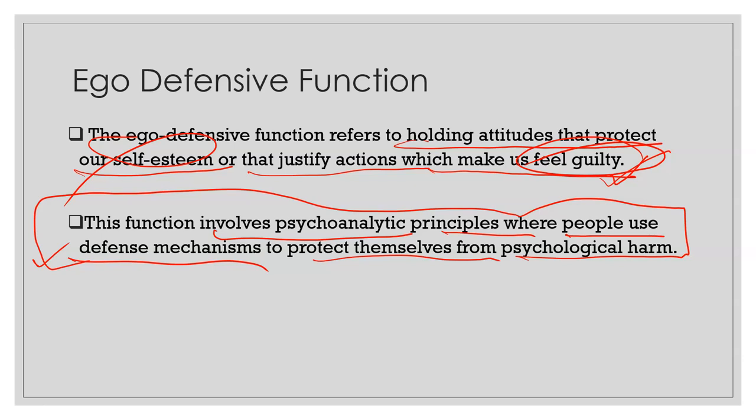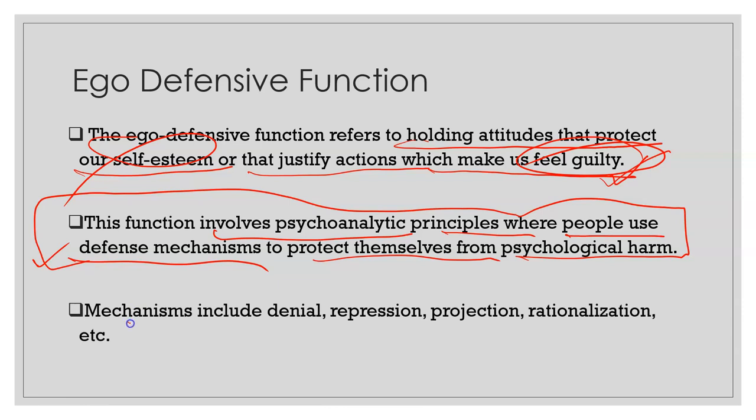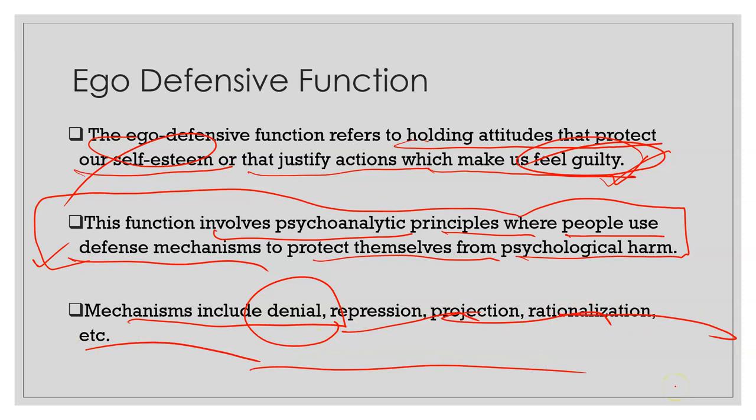There are certain defense mechanisms we adopt based on what kind of harm we are facing from a stimulus. These mechanisms include denial, repression, projection, and rationalization — these are all examples of the ego defensive function.